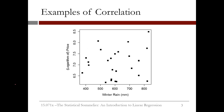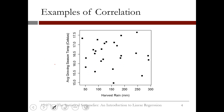This plot graphs winter rain on the x-axis and wine price on the y-axis. By visually inspecting this plot, we can see that it looks like there's a slight positive linear relationship between these two variables. It turns out that the correlation between winter rain and wine price is 0.14, which corresponds to a slightly positive linear relationship, as we saw visually. This plot graphs harvest rain on the x-axis and average growing season temperature on the y-axis. It's hard to visually see a positive or negative linear trend in this data. It turns out that the correlation is equal to negative 0.06, which is very close to zero and corresponds to very little linear relationship.